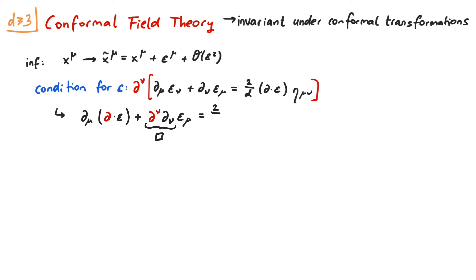On the right-hand side, we get d_mu acting on the divergence of epsilon after contracting the derivative with the metric. Now we take one more derivative with respect to d_nu. This yields d_mu d_nu acting on the divergence of epsilon plus the box operator acting on d_nu epsilon_mu, and this is equal to 2 over d times d_mu d_nu acting on the divergence of epsilon.